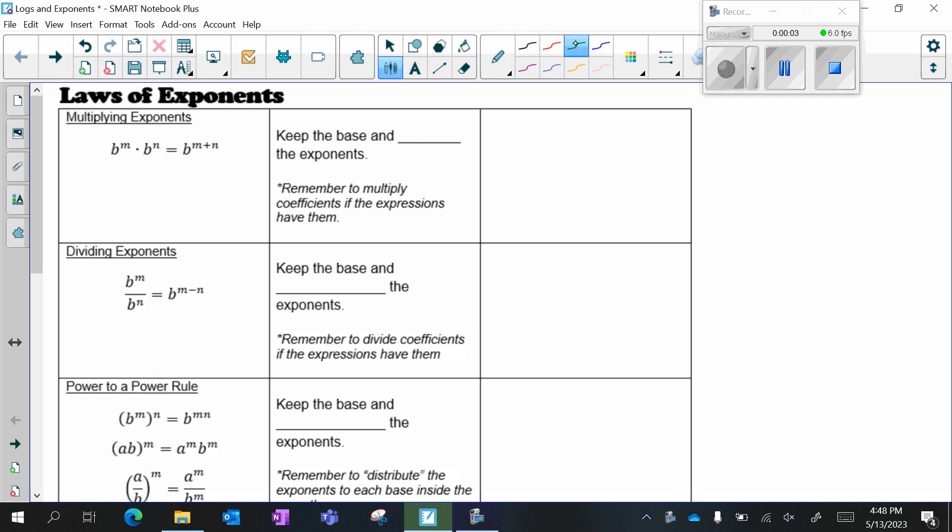So let's review our laws of exponents. When we are multiplying, we keep the base and we add the exponents. But you have to remember to multiply your coefficients. So if we have something basic, just like x to the fifth times x to the third, five plus three gives us x to the eighth. But if I have numbers in front like this, I have to multiply my coefficients first. So four times two gives me eight, and then I work with the exponents.